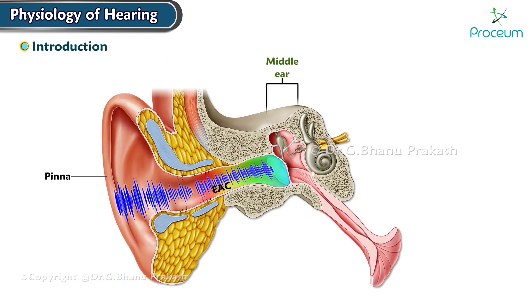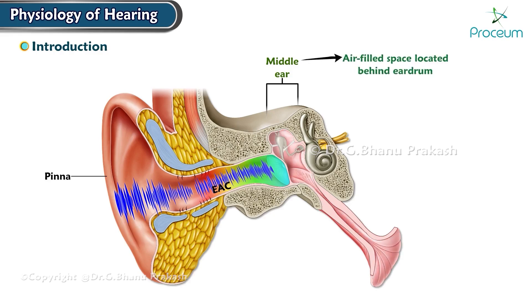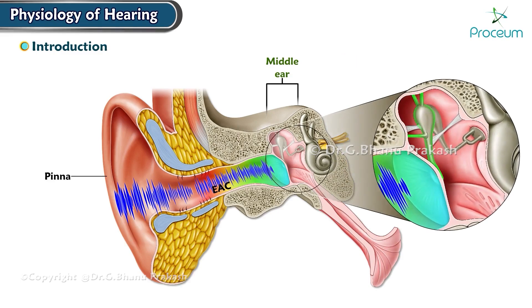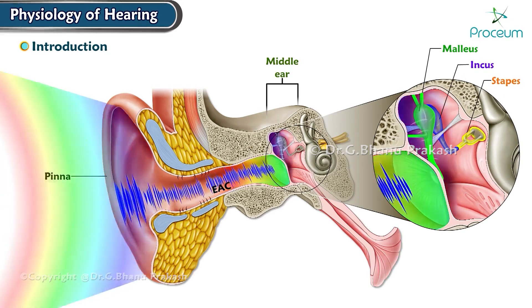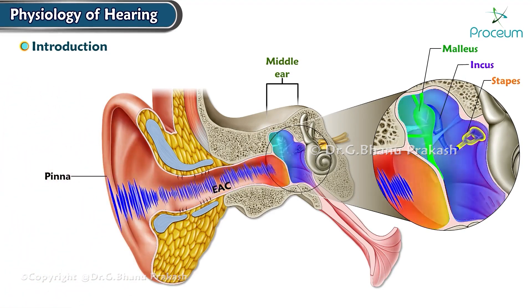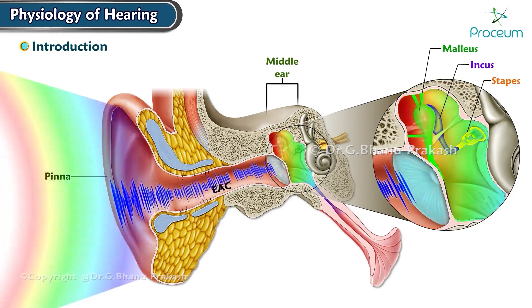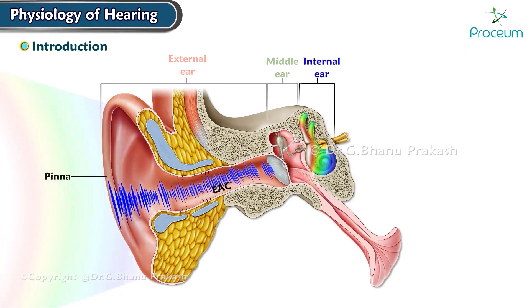The middle ear is an air-filled space located behind the eardrum. The middle ear consists of three small bones called ossicles: the malleus, incus, and stapes. These bones amplify the sound waves and transmit them from the eardrum to the inner ear.